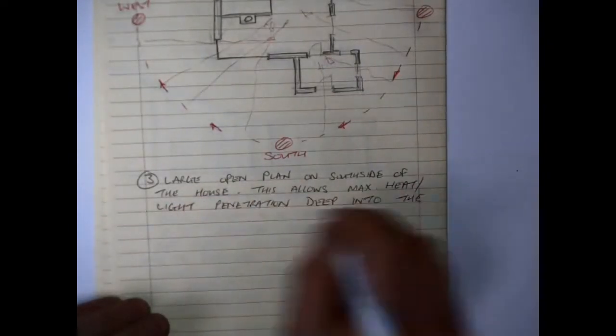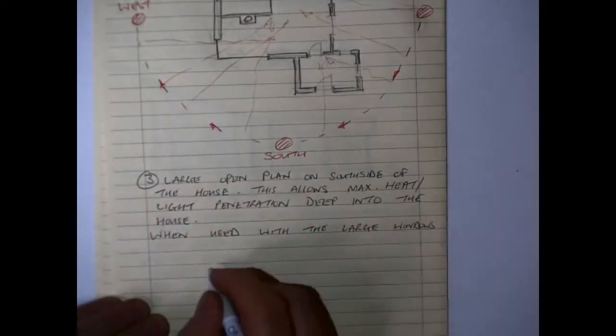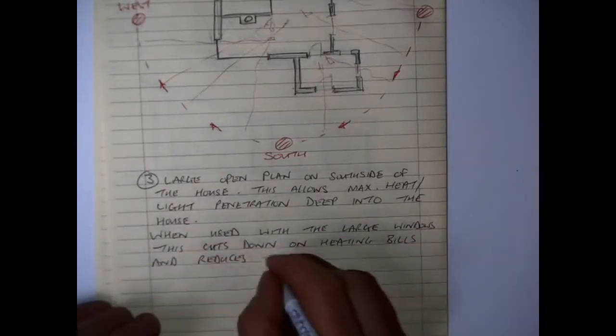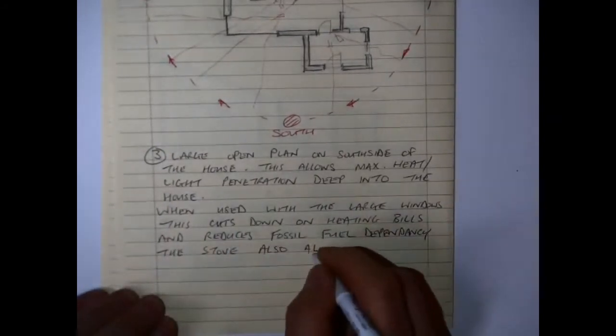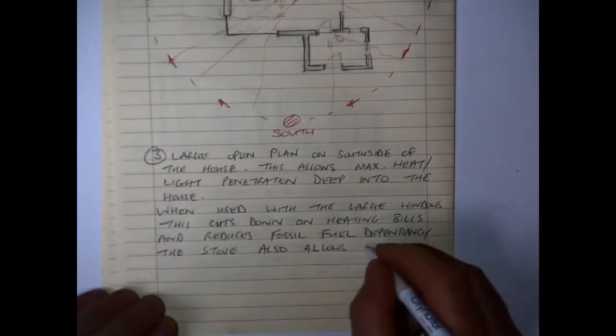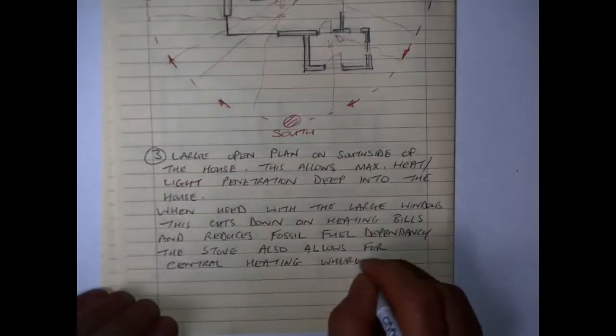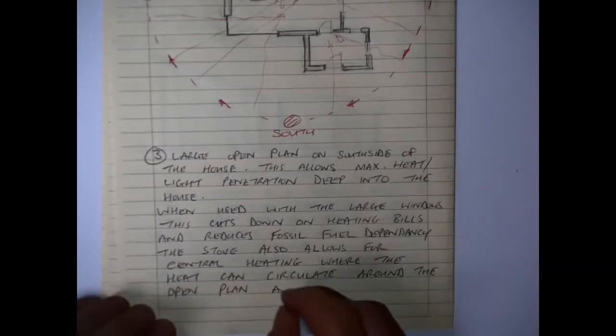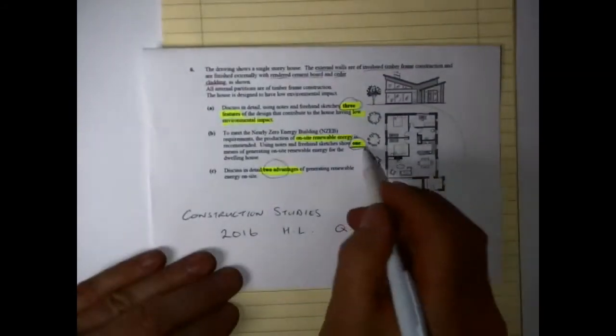Large open plan on the south side of the house allows for the maximum of heat penetration on here. Also, it's the most used part of the building, so that's these are the parts of the building that you want to orientate to the solar side so that you don't have to use artificial light, you don't have to draw on extra heat as well. When it's used with the large windows, it cuts down on heating bills, reduces fossil fuel dependency. The stove also allows for central heating where the heat can be circulated around the open plan area. And I suppose if that stove was to be a wood pellet stove as well, again you're drawing on the feature that would be sustainability with using a material which is renewable and reducing the CO2 emissions as well.